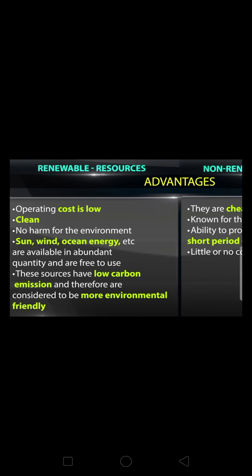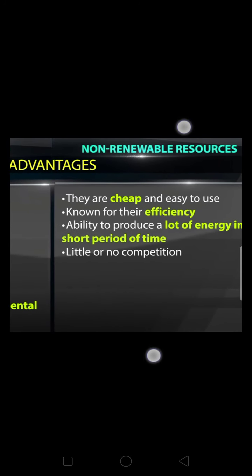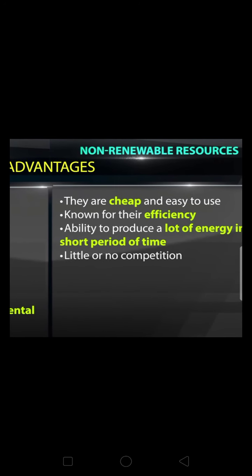Advantages of renewable sources of energy: their operating cost is low, they are clean and cause no harm to the environment. Sun, wind, and ocean energy are available in abundant, large amounts and are free to use. These sources have low carbon emissions and are considered more environmentally friendly. Non-renewable sources of energy: they are cheap and easy to use, known for their efficiency and ability to produce large amounts of energy in a shorter period of time.